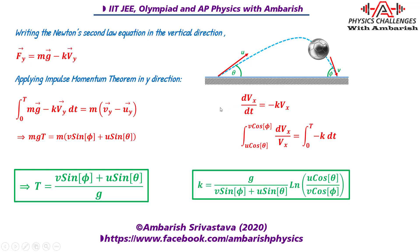The drag coefficient is k = g / (v·sin(phi) + u·sin(theta)) times ln(u·cos(theta) / v·cos(phi)). That is our complete solution to the Drag Force Detectives problem.